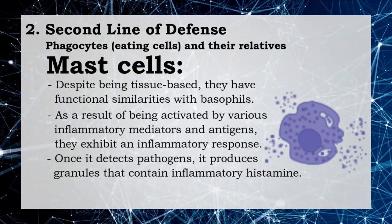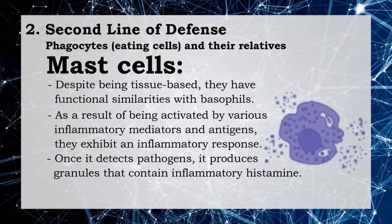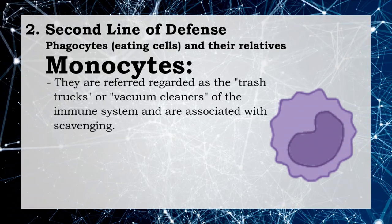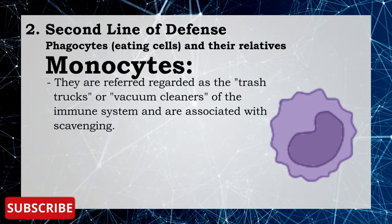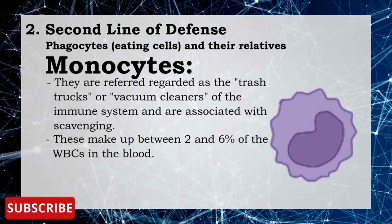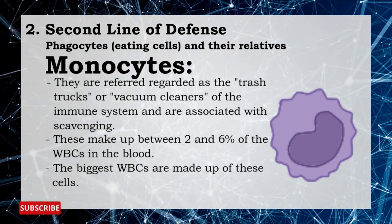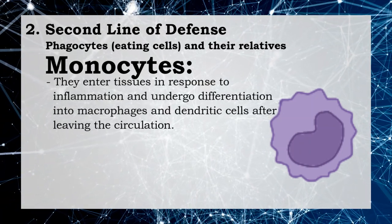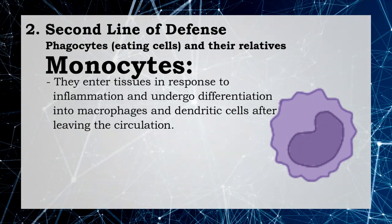Once a mast cell detects a pathogen, it produces granules that contain inflammatory histamine. Third, monocytes: these are regarded as the trash trucks or vacuum cleaners of the immune system and are associated with scavenging. They make up between two to six percent of white blood cells and are the biggest white blood cells. They enter tissues in response to inflammation and undergo differentiation into macrophages and dendritic cells after leaving the circulation.